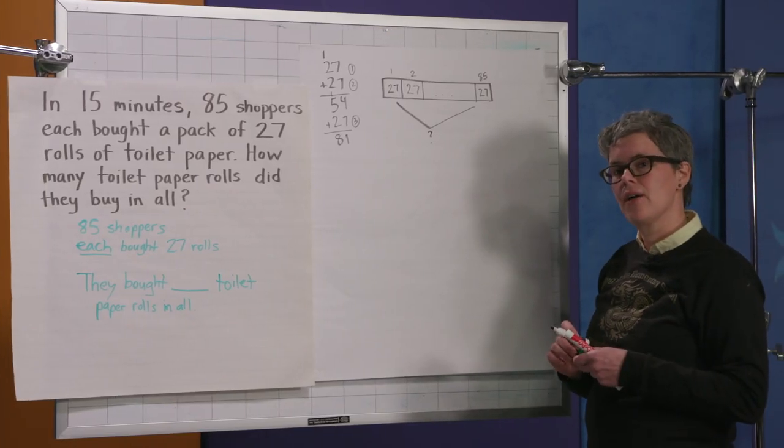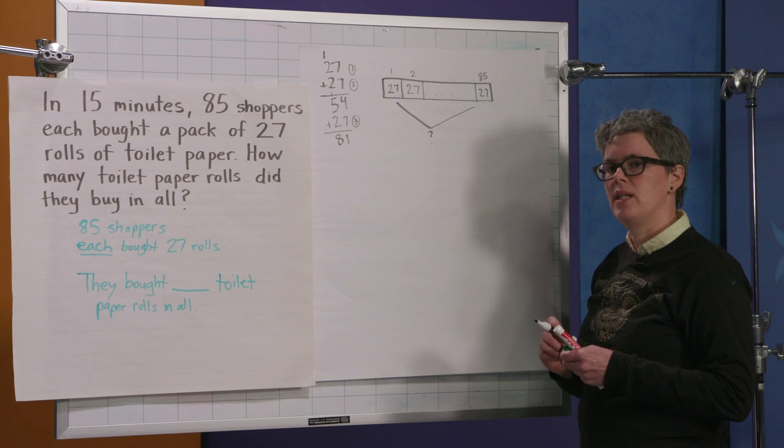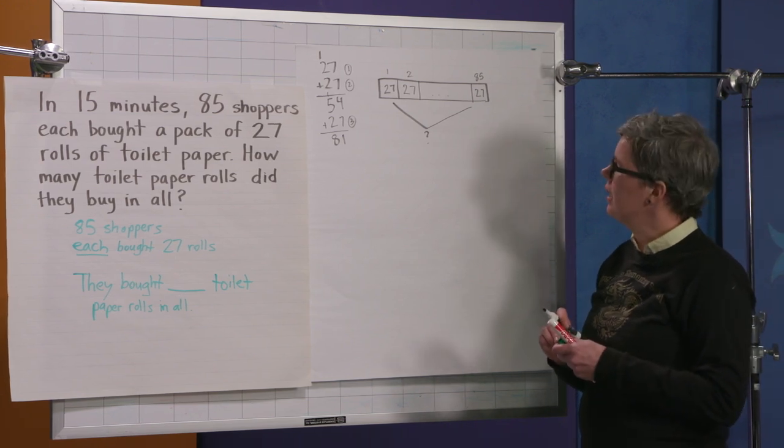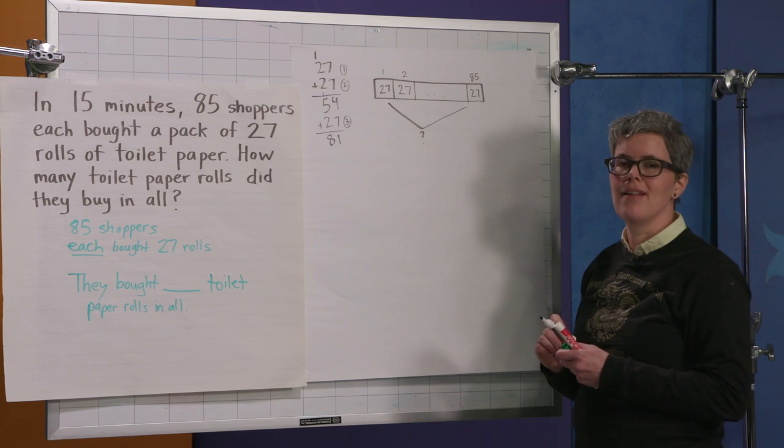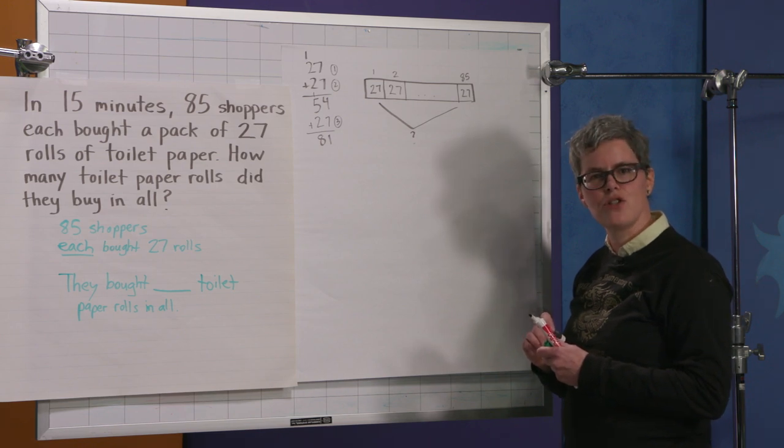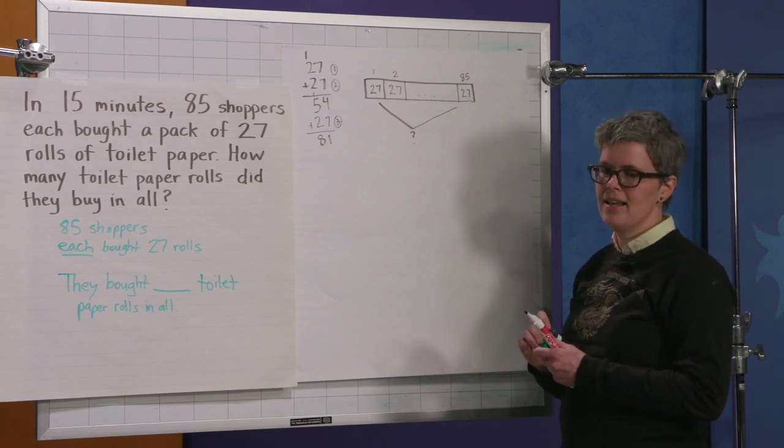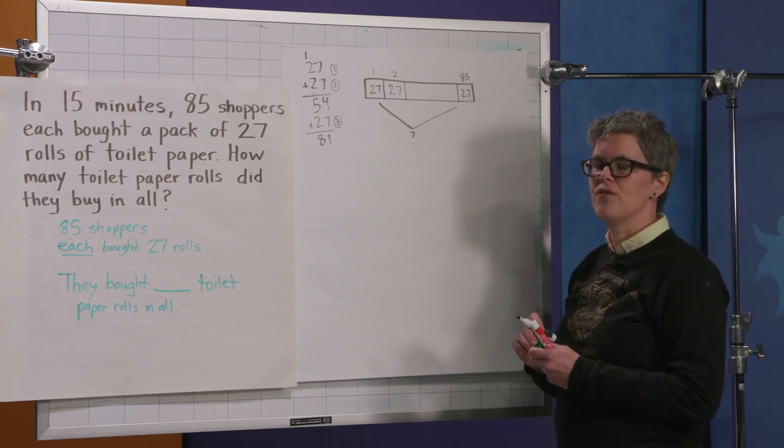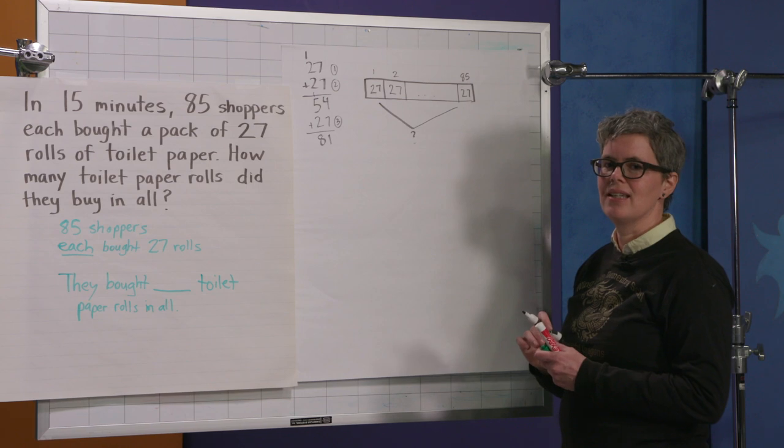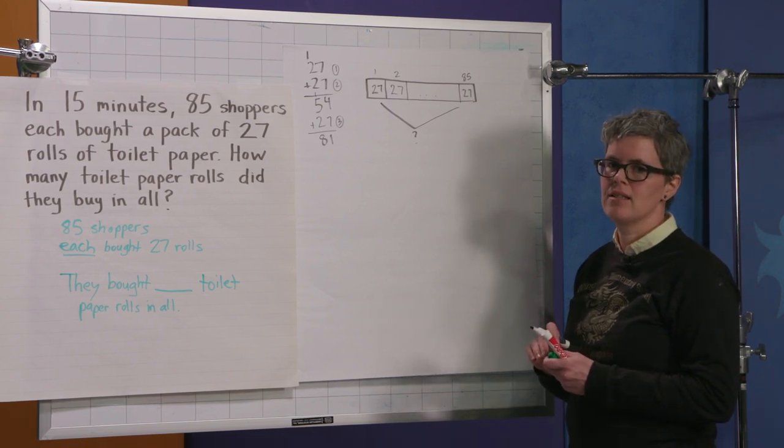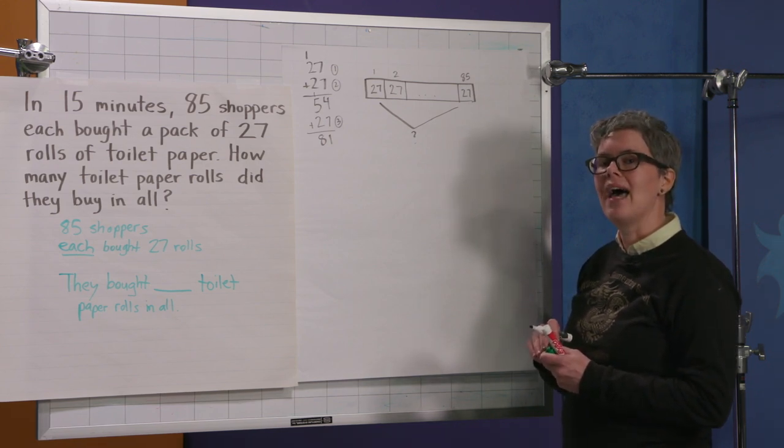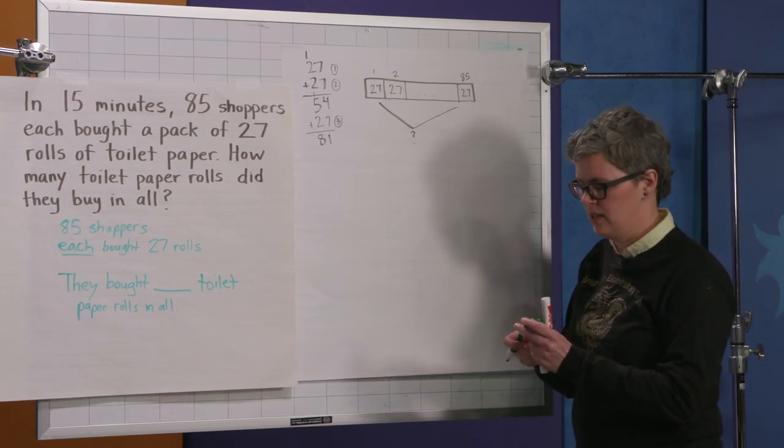So what I'm going to show you right now is how to do the area model. There's lots of different ways that we can solve multiplication problems, and this is one that helps us really to see what we're doing and why we're doing it. So older family members, I know that a lot of times you see work come home and you're not sure, what? I didn't learn this way. I don't even know what they're asking them to do. Why don't they just show them the standard quick way? Well, like I just said, mathematicians love shortcuts, but we have to understand first why we're doing what we're doing. And so this way that I'm going to show you, the area model, helps kids understand conceptually, and then later we can make shortcuts.